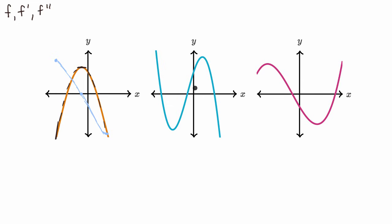We can immediately tell that this blue graph is not the derivative of this orange graph — its trend is opposite. Over that interval, it's going from negative to positive, as opposed to going from positive to negative. So we can rule out the blue graph as being the derivative of the orange graph.